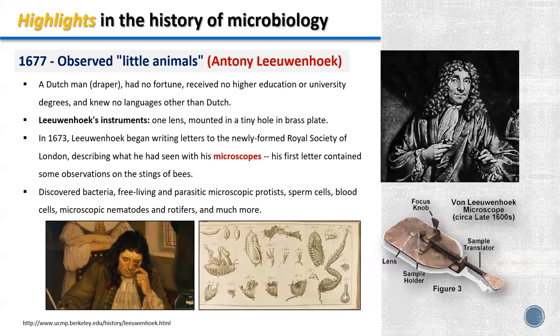Leeuwenhoek was a lens maker. He applied his knowledge to build a simple microscope with a lens, a holder, and something to adjust and focus the image. The size of what he made was very tiny. In 1673, Leeuwenhoek began writing letters to the newly formed Royal Society of London describing what he had seen with his microscopes. His first letter contained observations on the sting of bees. Later, he discovered bacteria, free-living and parasitic microscopic protists, sperm cells, blood cells, microscopic nematodes, rotifers, and much more.